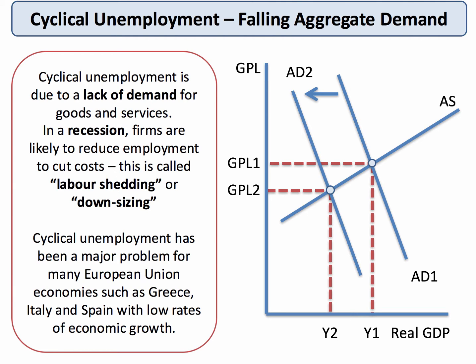Keep in mind that the demand for labour is a derived demand, so if consumers are cutting back on their spending this reduces employment demand as businesses look to control their costs. We call that labour shedding or downsizing, and this has certainly been a persistent problem in many countries, especially countries inside the eurozone such as Greece, Spain and Italy, where economic growth has been negative or weak and unemployment has been persistently high.